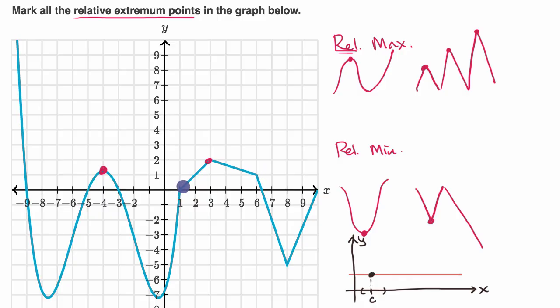At this point right over here, if you go to the right, you have values that are higher than it. So it's really not at the top of a hill. And right over here, if you go to the left, you have values that are higher than it. So it's also not the top of a hill.